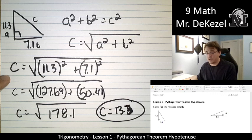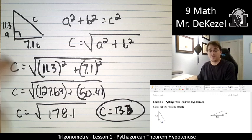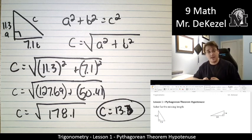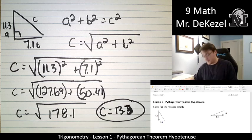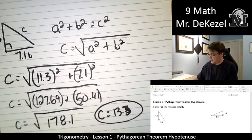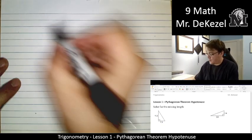And it's important that we just kind of check to see if that makes sense. It's going to be the longest side. It should be longer than 11.3 and 7.1, and it is, so that makes some sense for an answer. Let's go ahead and go to the next one.